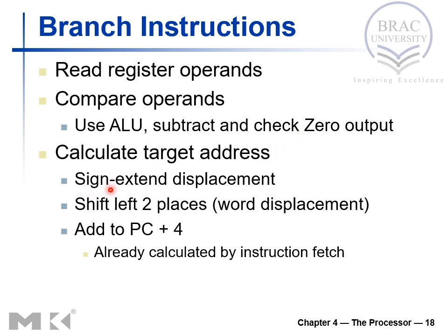Once we decide to branch, we need to sign-extend the displacement — that is, the offset or constant we have. In this case the branching we are discussing is I-type branching, which means branch equal and branch not equal. The value is 16 bits, so we need to make it 32 bits with sign extension.